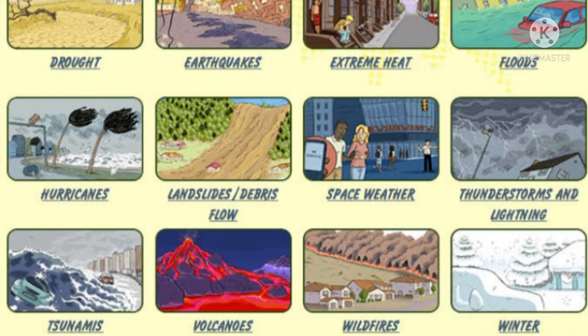Seventh is space weather. Eighth is thunderstorms and lightning. Ninth is tsunamis. Tenth is volcanoes. Eleventh is wildfires. And the last one, twelfth is winter storms, or you can say extreme cold.